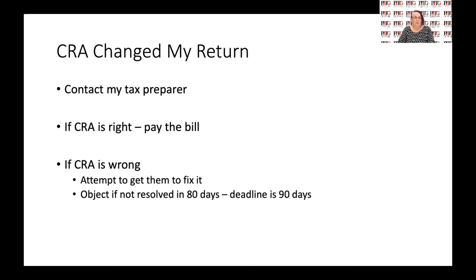The issue is that you only have 90 days, generally, to object to a reassessment of your tax return. That's 90 days from the date on the notice of assessment, so you need to keep track of that deadline. If you reach 80 days without a resolution from CRA, you need to file a Notice of Objection — form T-400A, available on the CRA website. Fill it out, explain the problem, and submit it either by uploading it to My CRA account or by sending it via registered mail, so there's proof you sent it within the 90 days.